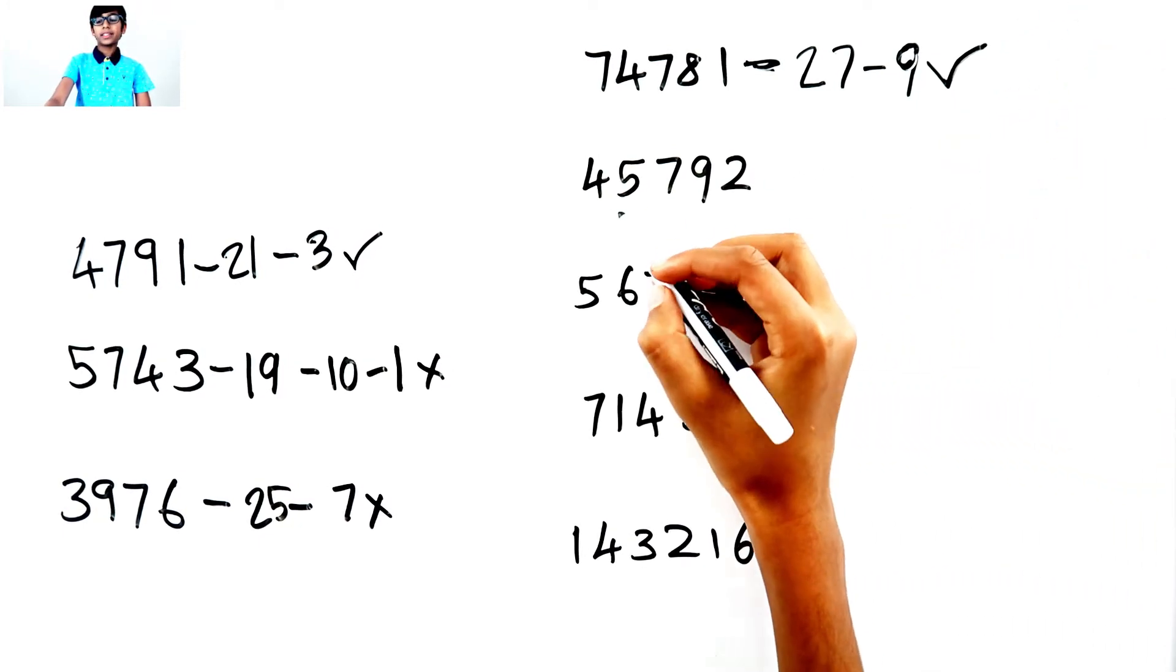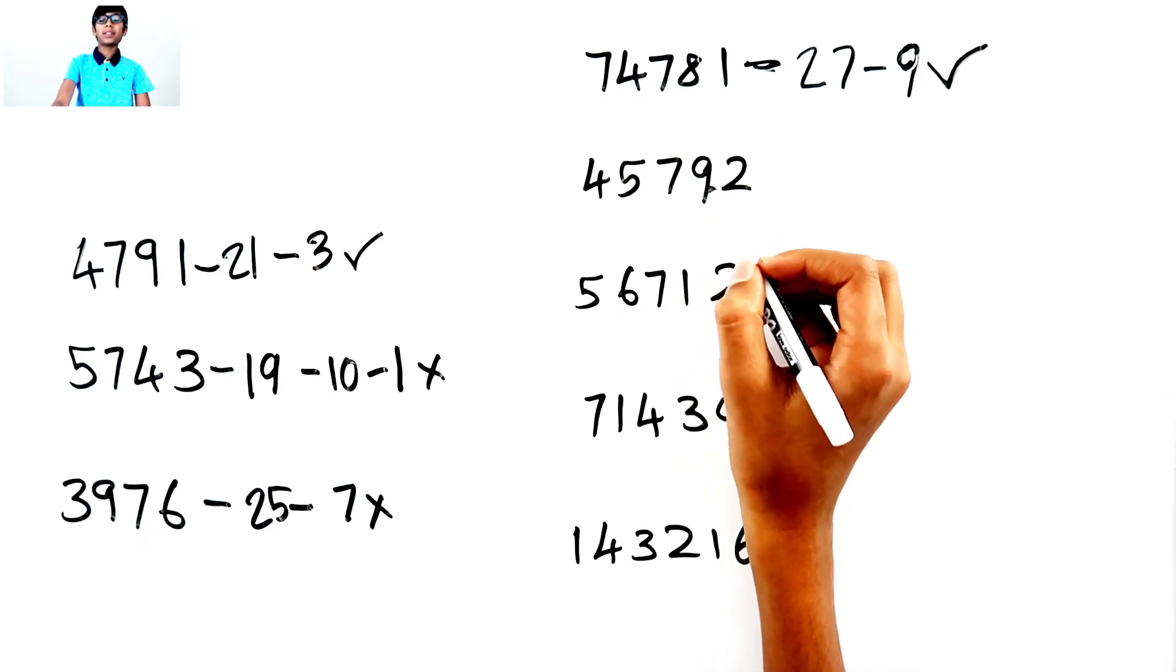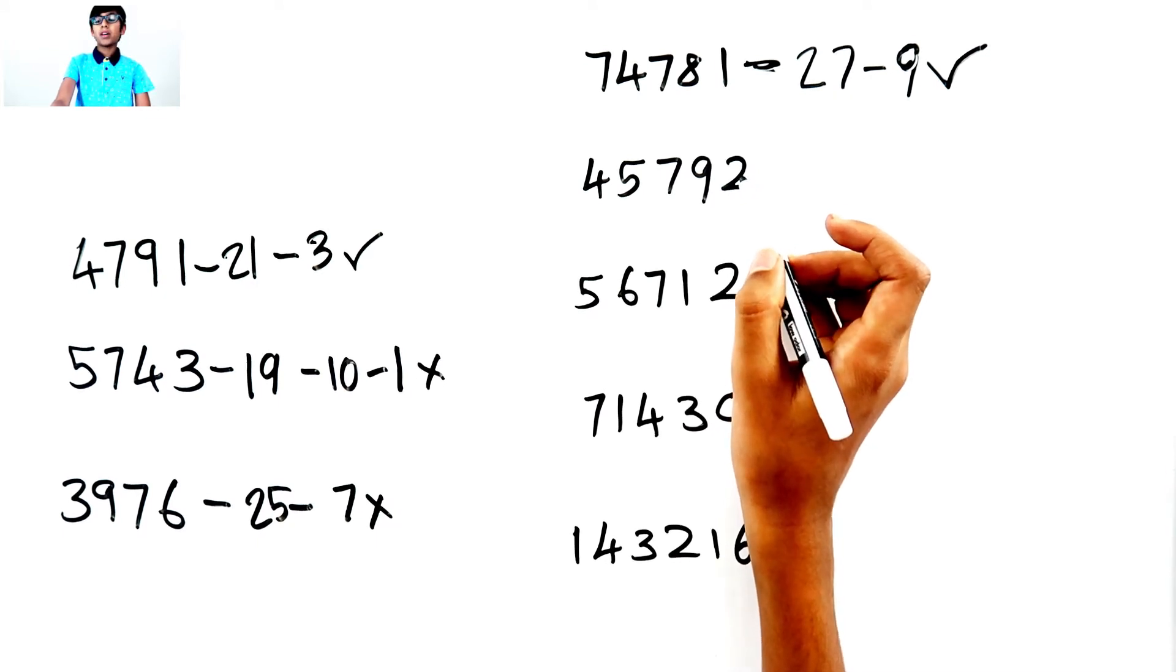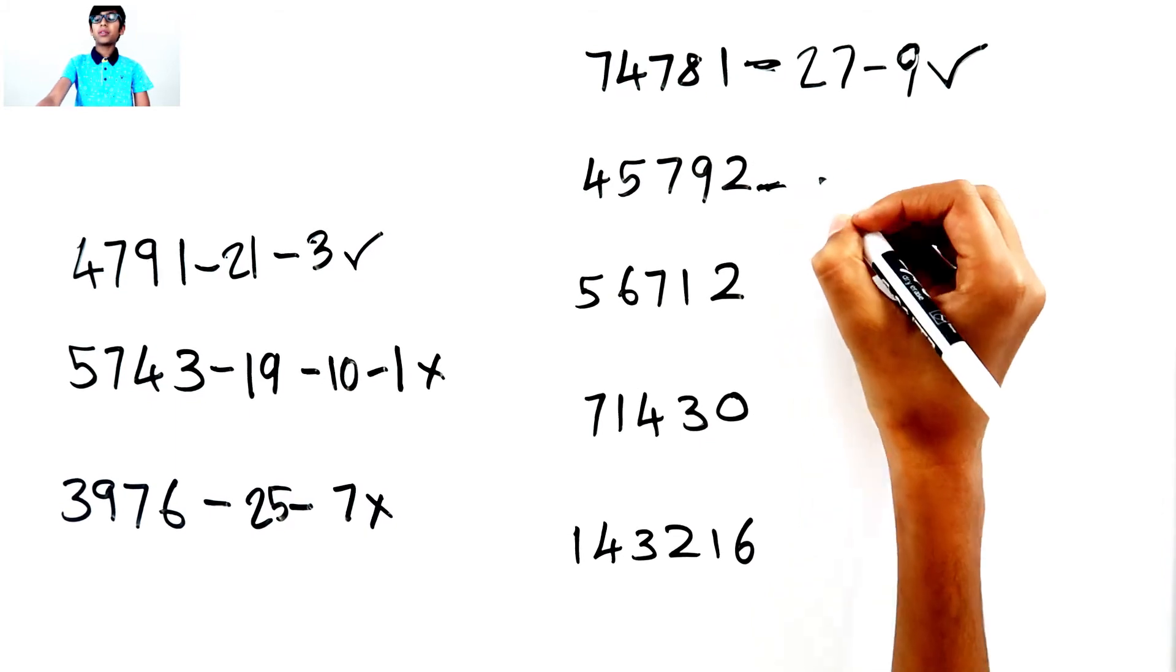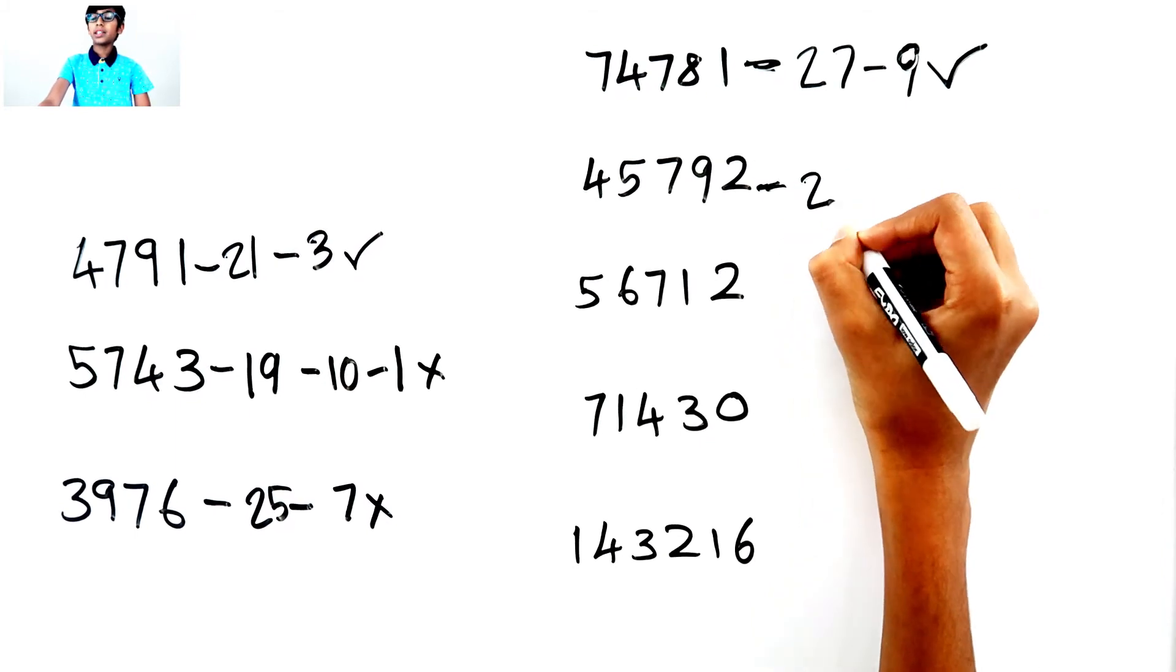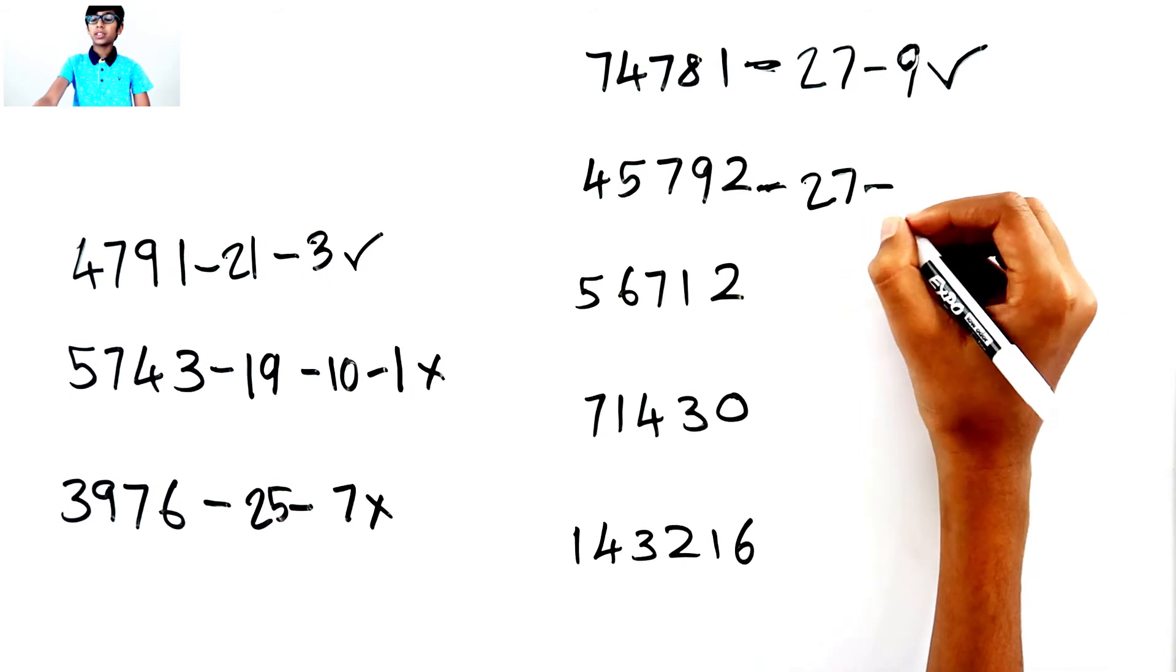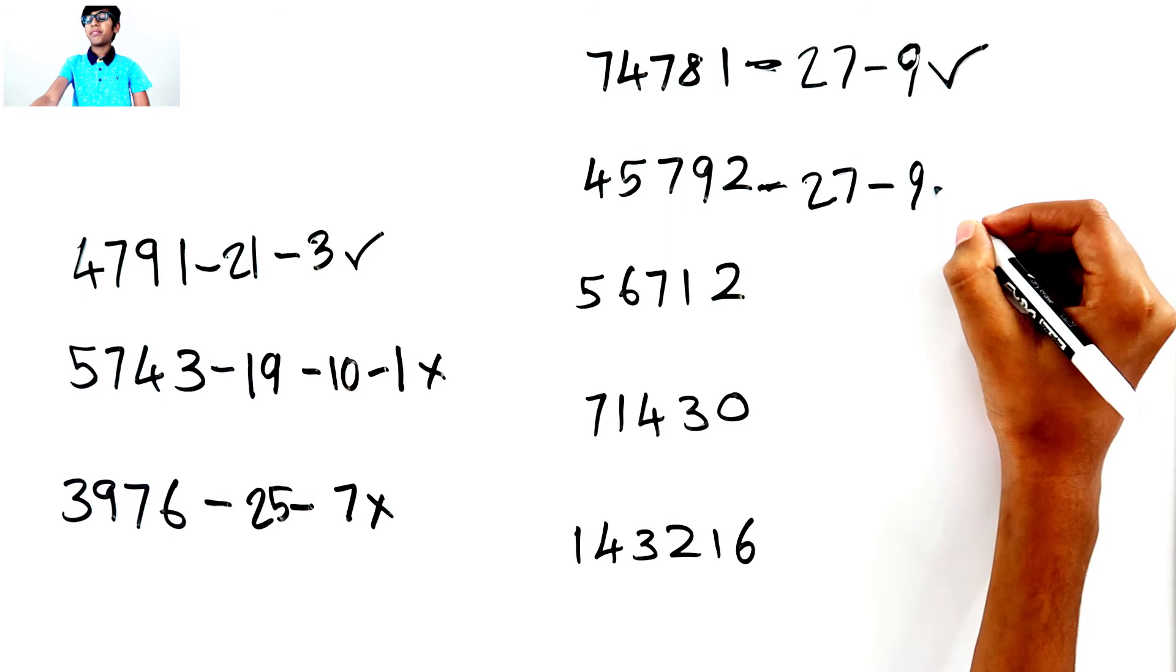Next, 4 plus 5. 9. 9 plus 7. 16. 16 plus 9. 25. Plus 2. Equals 27. Which equals 2 plus 7. 9. And it can be divided by 3.